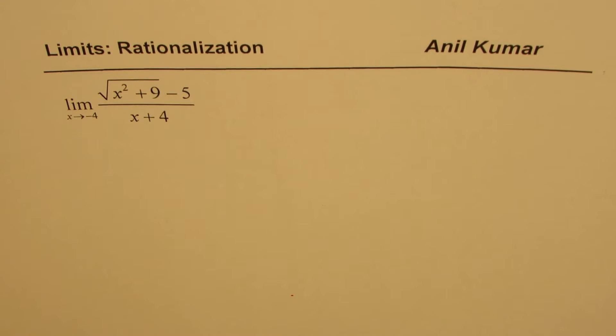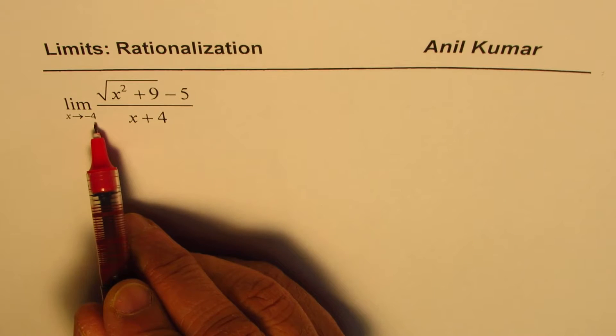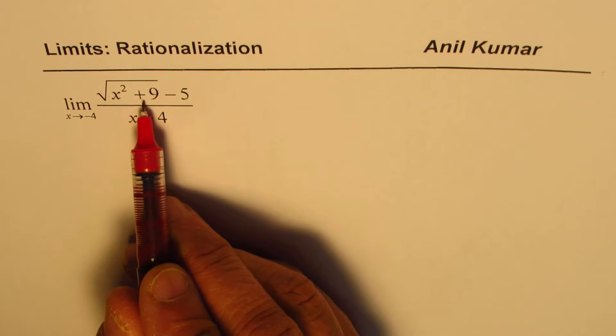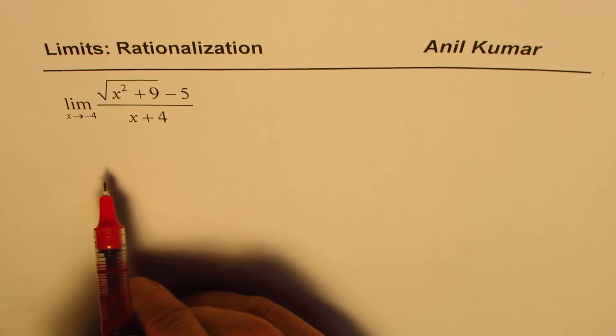I'm Anil Kumar and now we'll find the limit for a function using rationalization. The question is: limit as x approaches minus 4 of square root of x² plus 9 minus 5, divided by x plus 4.